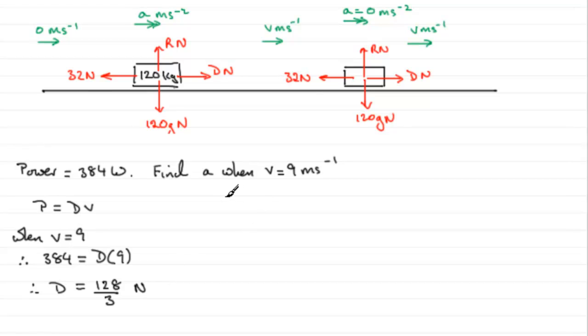So next, all we need to do is just resolve to the right. So using force equals mass times acceleration, we've got D minus the resistance of 32 newtons equals the mass, which is 120 kilograms, times the acceleration A.